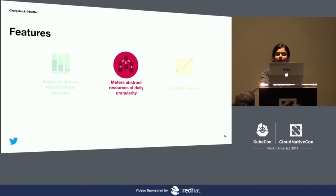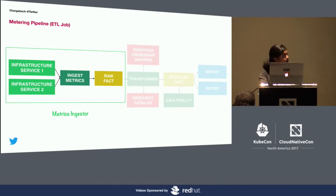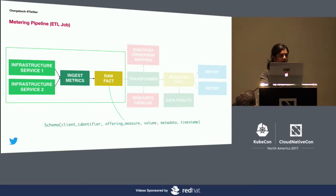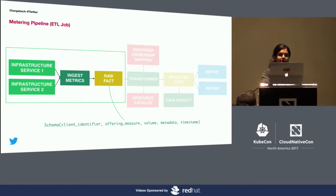The second feature is the metering service that tracks utilization of resources. We work with every infrastructure service owner to export their resource usage data. These are classic ETL pipelines that extract data from different sources — for example, Aurora Scheduler, Hadoop Master — that are transformed and loaded into a generalized chargeback schema called the RAWFACT. Our contract is pretty simple: the RAWFACT expects the client identifier, offering measure, volume, and additional metadata such as job environment or directory paths when it comes to file accesses, and the timestamps.